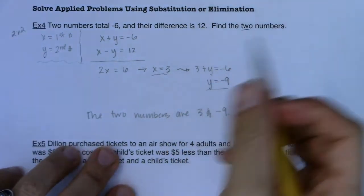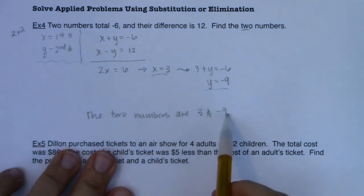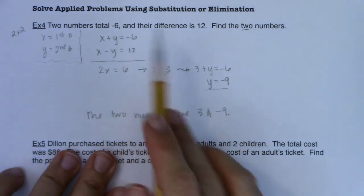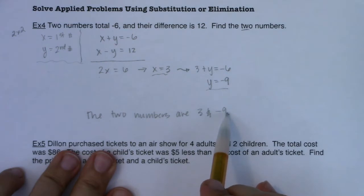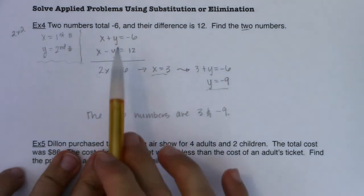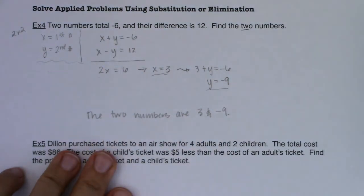Let's check it. What is three plus negative nine? That's negative six. What is three minus negative nine? Three minus negative nine is three plus nine, and that's 12.